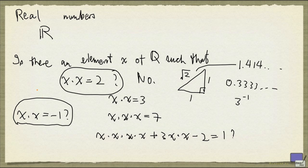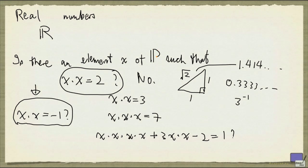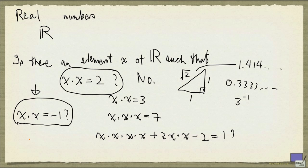Let's go back to the earlier question: is there an element x of R such that x times x equals minus 1? One of the things we know is that if you multiply a real number by itself, you always get something that is non-negative. And so there is no real number that satisfies this equation.